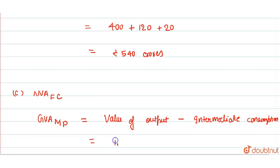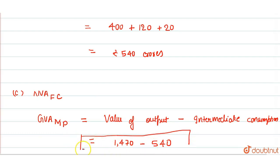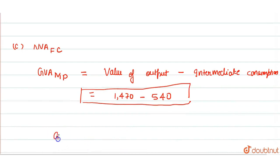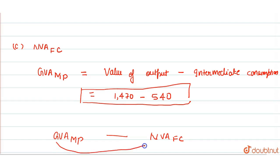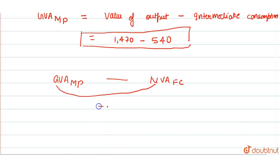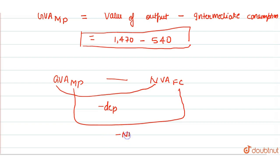So the gross value added at market price comes to 1,470 crores minus 540. Now to get net value added at factor cost from gross value added at market price, we need to subtract depreciation, and also subtract net indirect tax. To go to factor cost, we subtract net indirect taxes — that is GST minus subsidies.